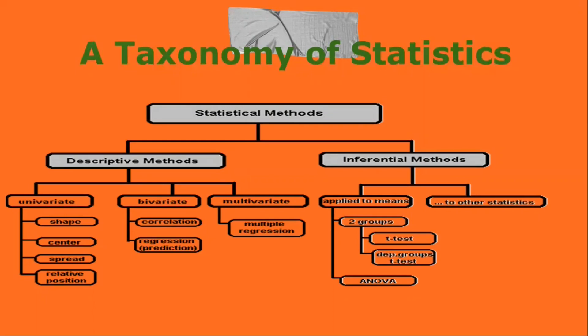As far as univariate statistics is concerned, what can be done is shape, center, spread, and relative position. Bivariate statistics looks at things like correlation and regression for prediction purposes. Lastly, we have multiple regression in multivariate statistics.